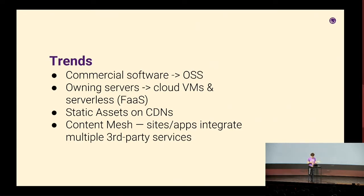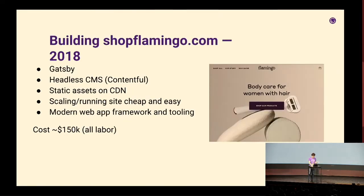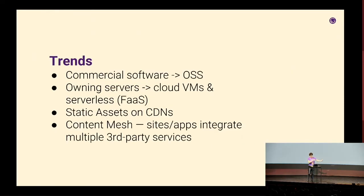All of their assets are static because Gatsby's build process produces static assets put on the CDN. Scaling and running the site is extremely cheap and easy because the CDN does all the work, and files can't break. Building and maintaining the site is straightforward because they're using modern web app framework and tooling. Wild estimate, but let's say it costs 150K to build and run. Trends we can see: commercial to open source software, owning servers to cloud VMs or serverless, static assets on CDNs, and the content mesh — using a hosted headless CMS like Contentful instead of running your own.